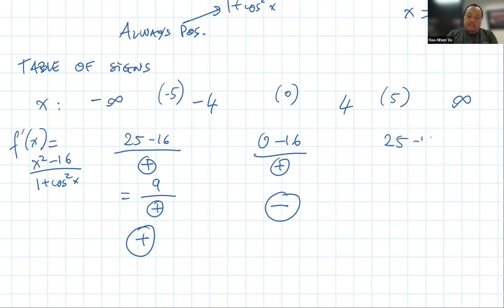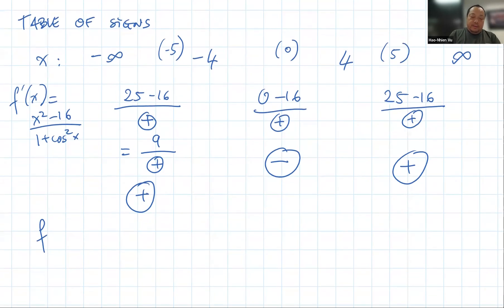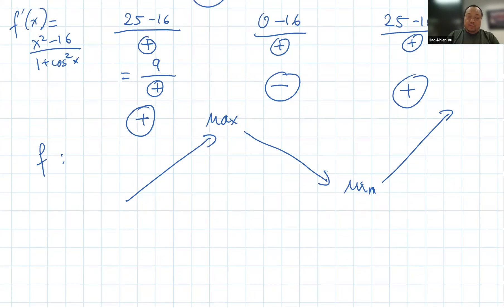Over here, I have 25 minus 16 over some positive number. Again, the whole thing is positive. That means the function f itself is increasing here, decreasing here and increasing there. That makes this a max and that makes this a minimum. The answer is that the maximum is at x equals negative four.